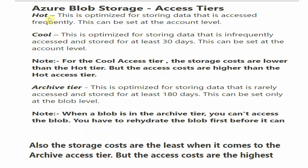Next, the Azure Blob Storage access tiers. We have Hot and Cool tiers. When you create a blob storage account, you select either hot or cool. The Hot tier is optimized for data that is accessed frequently — like credentials or data you need to access regularly. The Cool tier is for data accessed infrequently, such as after 30 days or so.